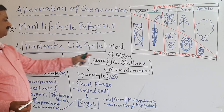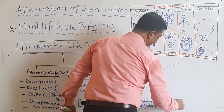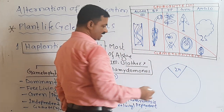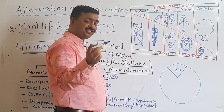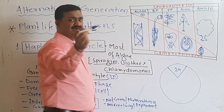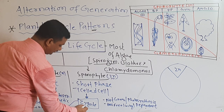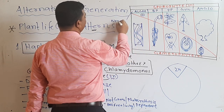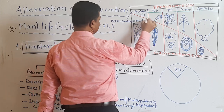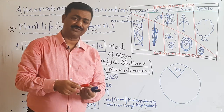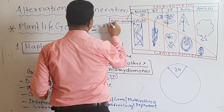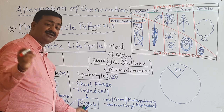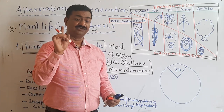You can see how most algae execute this type of life cycle pattern — a very short phase of 2n, that 2n being the zygote. This zygote executes meiosis — zygotic meiosis. That's why in a haplontic life cycle, this zygote does not form an embryo, so these algae are non-embryophytes. A question may come: give an example of non-embryophyte algae.